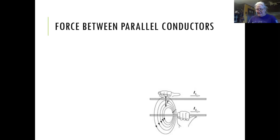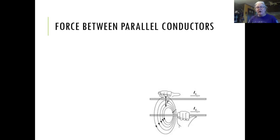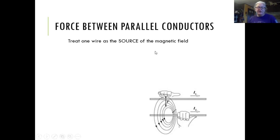The bottom wire in the picture is the source — we look at the direction of its current flow and figure out how its field works. For a current-carrying wire, the field circles around the wire, making closed circles. Depending on what side of the wire you're looking at, the field points in different directions. In this case, the test wire is above the source, so the field is coming out of the page. We use the right-hand rule to figure out the direction of the force.